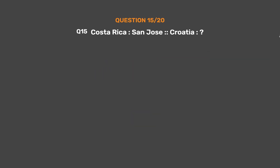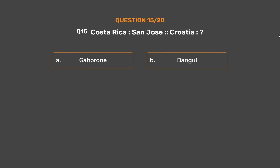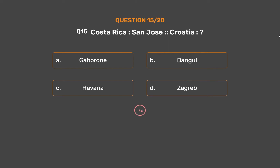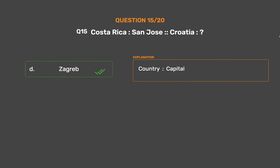Question No. 15. Costa Rica : San Jose :: Croatia : ? Option A: Gaborone. Option B: Bangkok. Option C: Havana. Option D: Zagreb. The correct answer is Option D, Zagreb. Country : Capital.